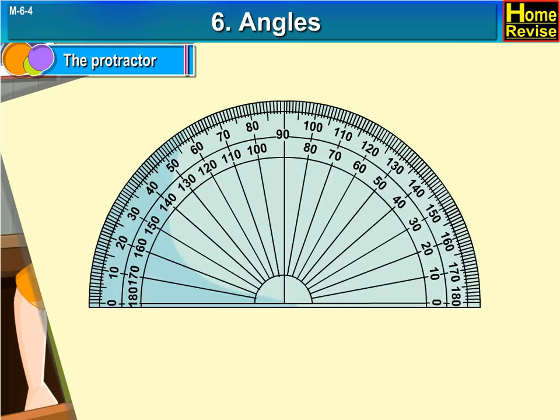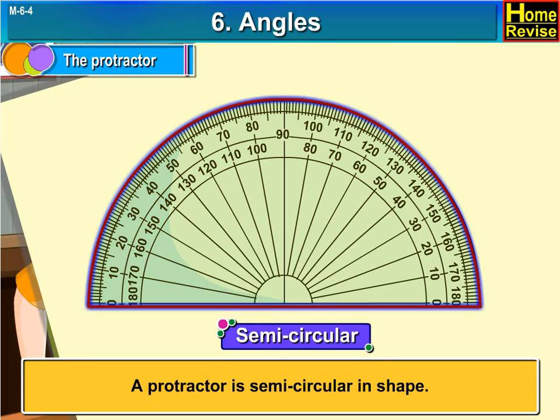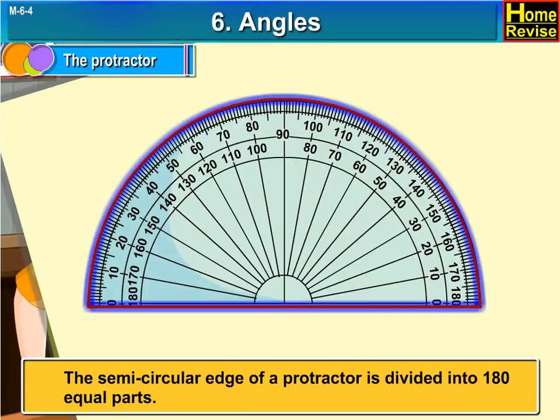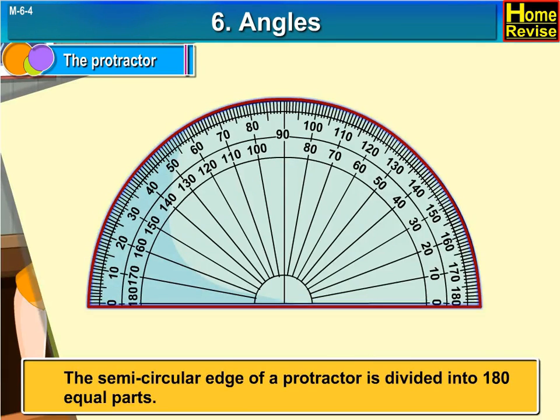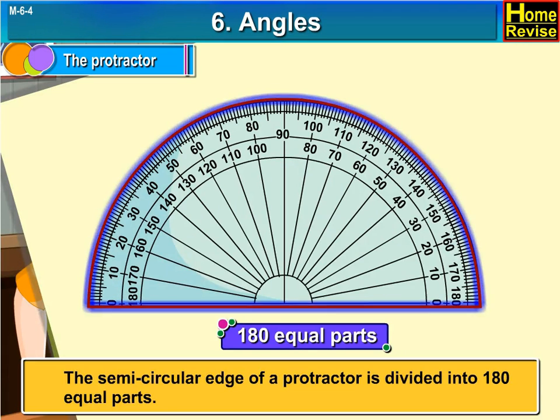This picture shows a Protractor. A Protractor is semi-circular in shape. The semi-circular edge of a Protractor is divided into 180 equal parts.